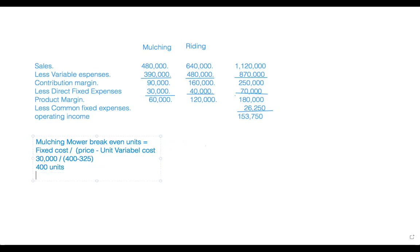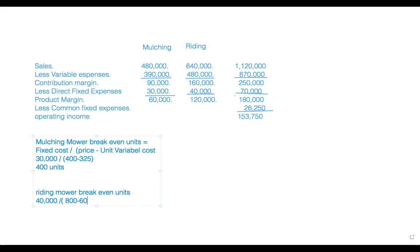For the riding mower, using the same formula: $40,000 fixed cost divided by $200 contribution margin per unit (which is $800 minus $600) = 200 units. So the mulching mower break-even is 400 units and the riding mower break-even is 200 units.